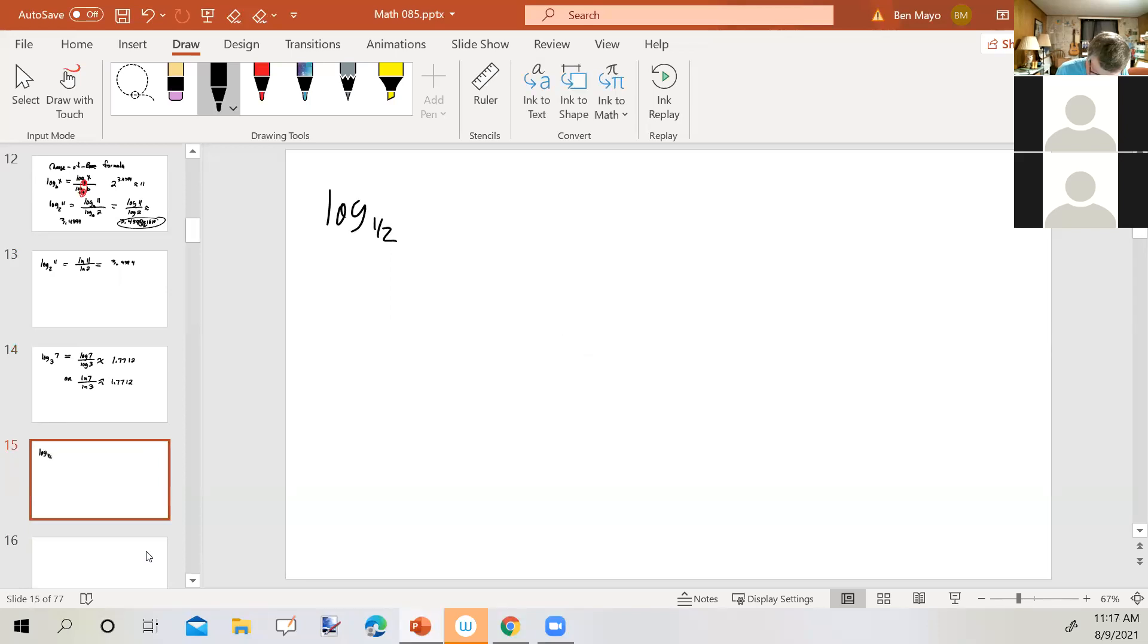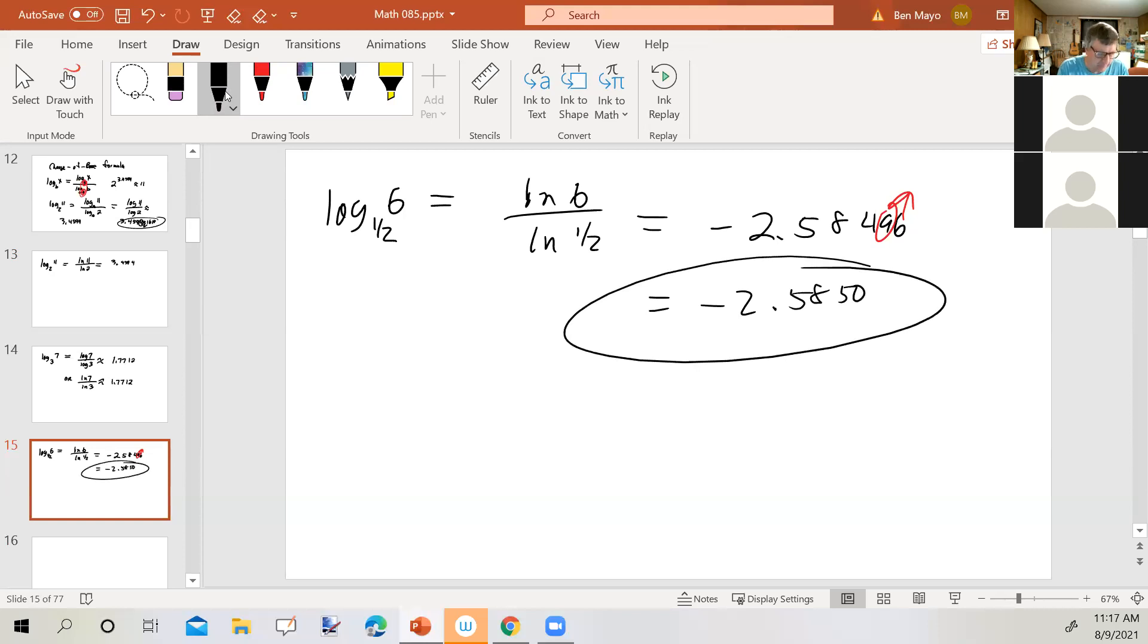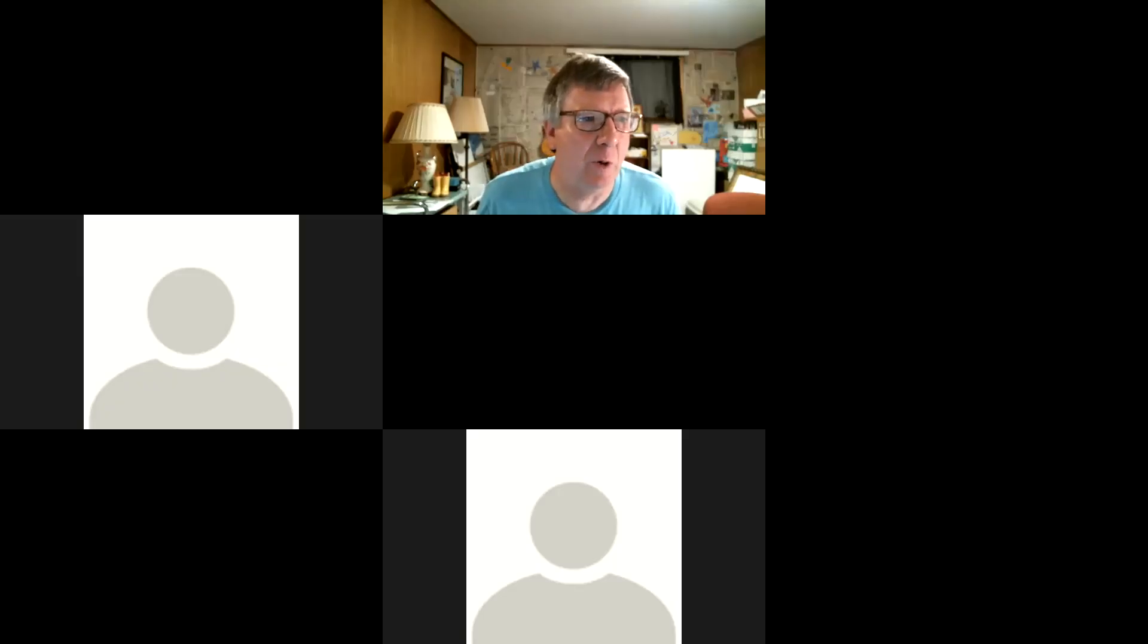Let's take a look at another one. Log base 1 half of 6. So we'll say the natural log of 6 over the natural log of 1 half. So natural log of 6, close it up, divided by natural log of 1 half, and I get negative 2.58496. So the 9 would round up, or I should say the 6 will round up, giving me negative 2.5850. All right, any questions about this change of base formula? All righty, then I'm going to stop the recording.